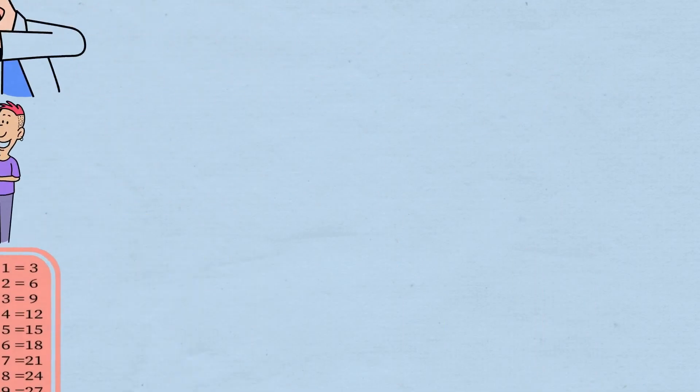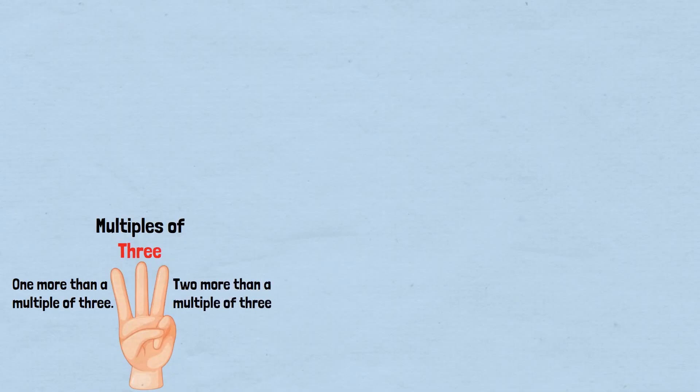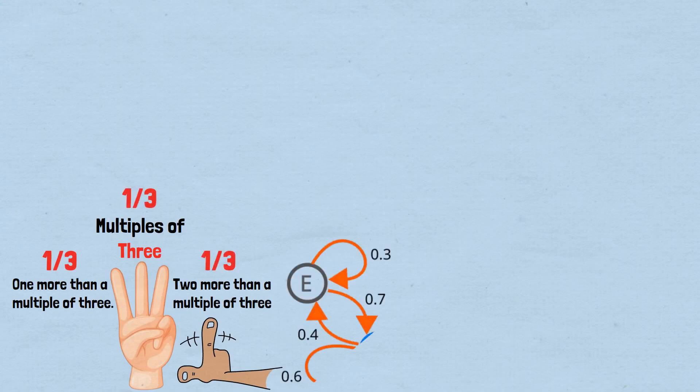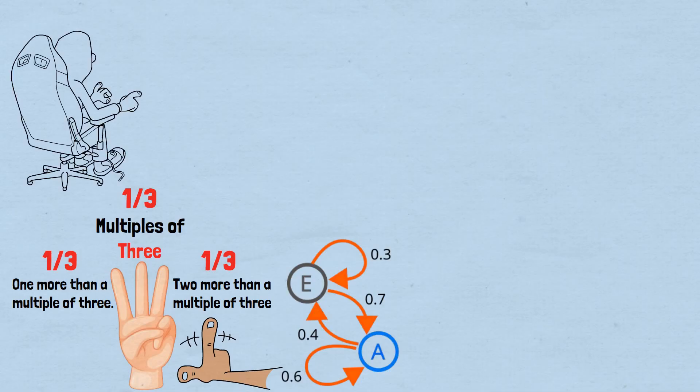The key insight is that even though there are only three possible states for your money balance—multiples of three, one more than a multiple of three, or two more than a multiple of three—the probabilities of being in each state aren't simply one-third each.